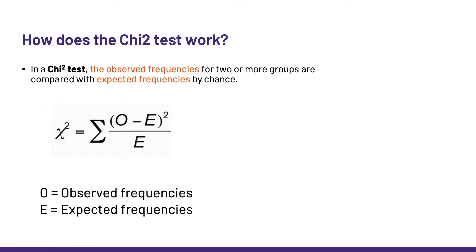How does the chi-square work? The main thing is that it compares observed frequencies with expected ones. The observed frequencies are the ones we observe in our experiment, and the expected ones are the ones we would have expected to see if there had been no relationship whatsoever between the two variables. Like most statistical tests, the chi-square produces a statistic which is about a difference of some kind. At the numerator, we have the difference between the observed and expected, so the bigger that difference, the more likely it is that what we observe is not due to chance.